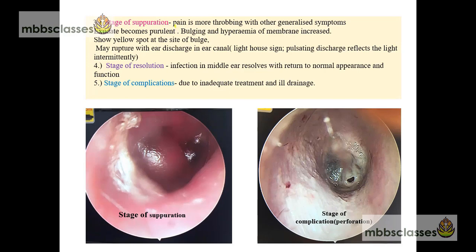In the stage of suppuration, the clinical presentation becomes more intense — the earache is more throbbing with other generalized symptoms. The exudate which was serous in the pre-suppurative stage becomes purulent. Because of that, there may be bulging and increased hyperemia of the membrane. Sometimes we may get a yellow spot at the site of bulge, signifying the area of maximum pressure on the drum. This is a picture showing an erythematous tympanic membrane with bulging in the posterior quadrant — this is the stage of suppuration. We may also see the lighthouse sign, meaning there will be pulsating discharge which reflects light intermittently.